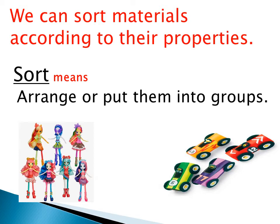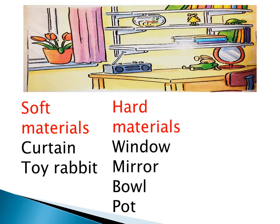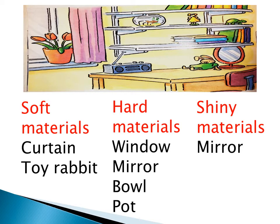Sorting is very important. We are going to look again at this picture and try to make different sortings. We made the first one according to materials. But we can put them into other groups — for example, soft materials like the curtain and the toy rabbit; they are soft and perhaps smooth also. Hard materials — can you name some? Like the window, the mirror, and the pole are hard.